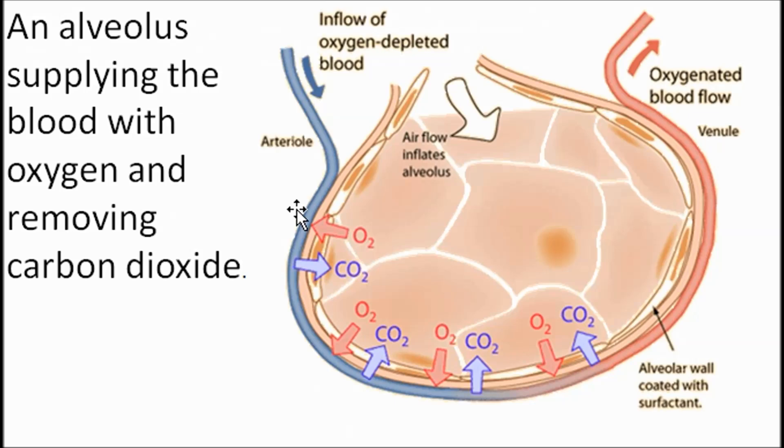Now, blood coming in from here is going to be, it's just been around the body. So it's dropped off all of its oxygen. It's going to be very low oxygen concentration. What's the oxygen concentration like in here, in this air sac? Well, you've been breathing, you've been ventilating, you've been refreshing, constantly refreshing this air in here as you breathe in and out. So we've got a high concentration of oxygen in here, low oxygen concentration in here, so oxygen will move by diffusion into your blood. It's a passive process, it just happens, it doesn't take any energy.